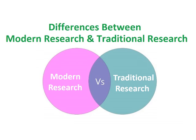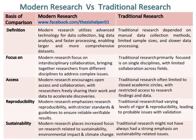Differences between Modern Research and Traditional Research. Modern research utilizes advanced technology for data collection, big data analysis, and faster processing, enabling larger and more comprehensive data sets. Whereas traditional research depended on manual data collection methods, limited sample sizes, and slower data processing.